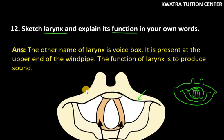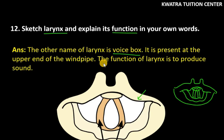What is the other thing? You have to write the function. What is the function of the larynx? The larynx is called the voice box. The function of the larynx is to produce sound. This is the answer for question number 12.